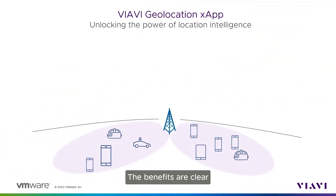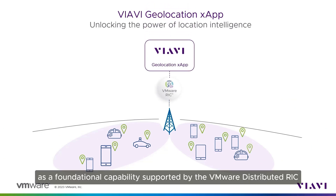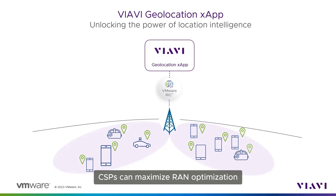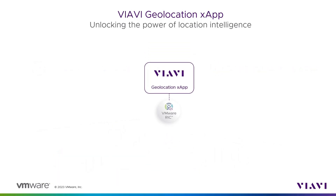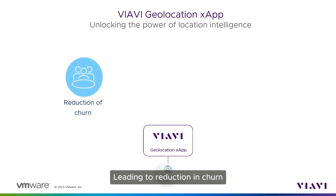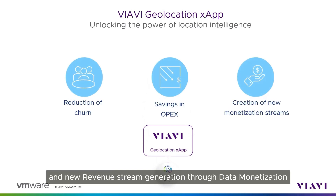The benefits are clear. Thanks to VIAVI Geolocation XApp as a foundational capability supported by the VMware Distributed RIC, CSPs can maximize RAN optimization with a focus on enhancing the overall subscriber quality of service, leading to reduction in churn, OPEX savings by enablement of automation use cases, and new revenue stream generation through data monetization.